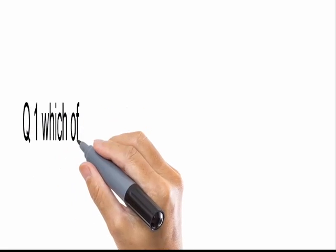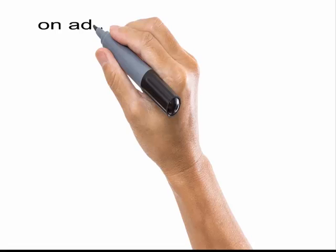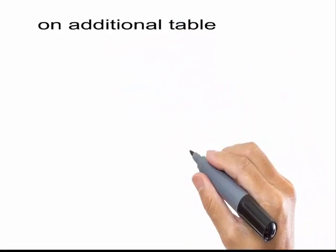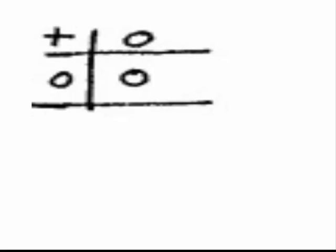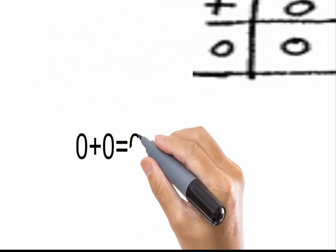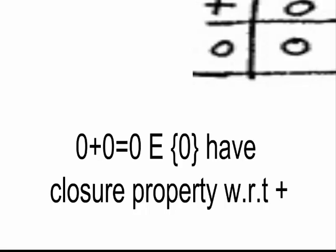Which of the following sets have closure property with respect to addition and multiplication? In the addition table, we know that 0 plus 0 equals 0, which belongs to our set. Hence, it is proved that our set has a closure property with respect to addition.